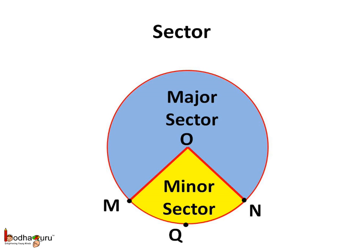So the sector of the circle is bounded by two radii. The smaller sector which is the minor sector of the circle is bounded by arc MQN. The rest of the circle is also a sector. It is the larger sector of the circle which is called the major sector.